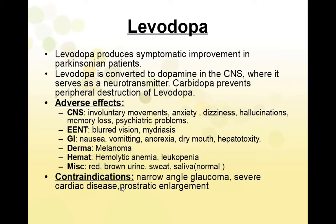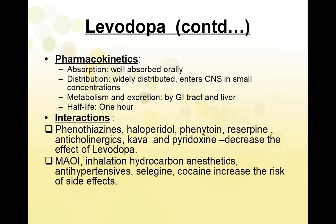Regarding contraindications, levodopa is contraindicated in narrow-angle glaucoma because it increases intraocular pressure, and also in severe cardiac diseases and prostatic enlargement. Regarding pharmacokinetics, levodopa is well absorbed when taken orally and is widely distributed in the body, but enters the CNS in small concentrations — which is why it is given in combination with carbidopa to prevent breakdown outside the CNS. Metabolism and excretion occur via the GI tract and liver, and the half-life of levodopa is 1 hour.